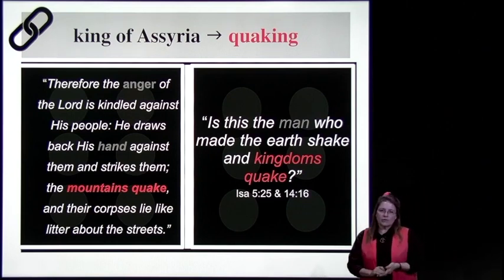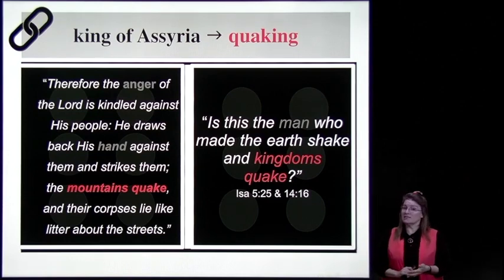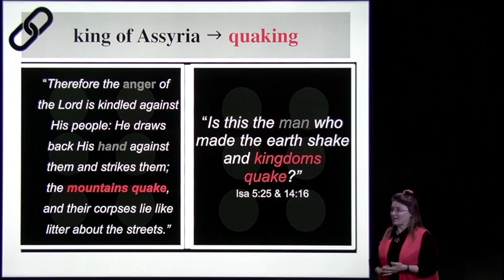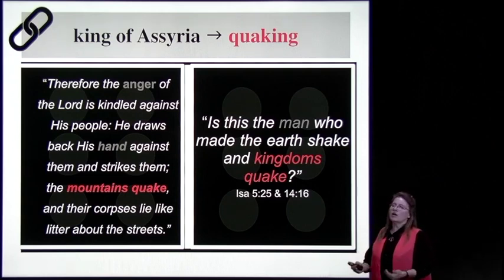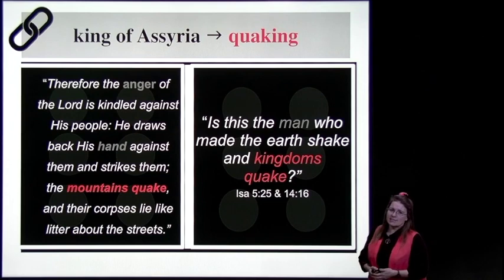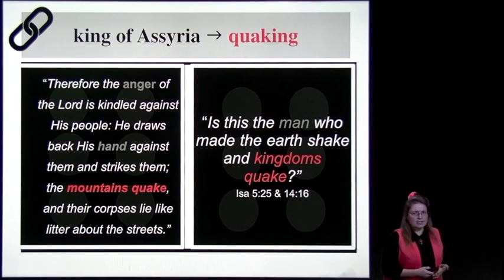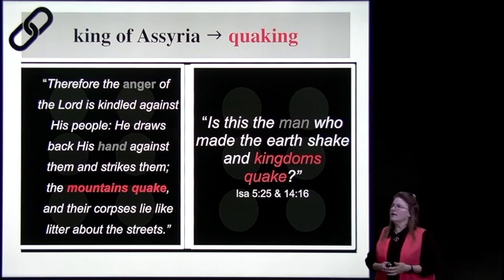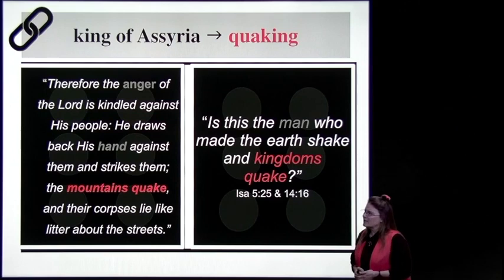'Therefore, the anger of the Lord is kindled against his people. He draws back his hand against them and strikes them. The mountains quake'—and remember, mountains are also nations in Isaiah—'and their corpses lie like litter about the streets.' Is this the man, in Isaiah 5 and Isaiah 14, who made the earth shake and kingdoms quake?